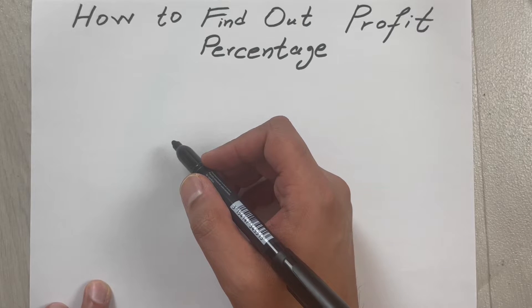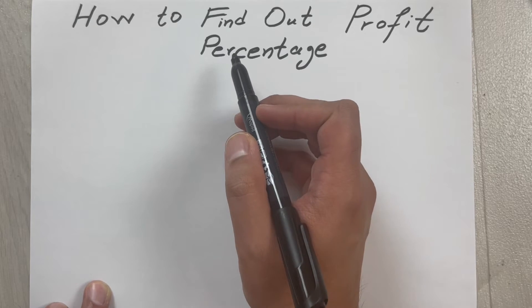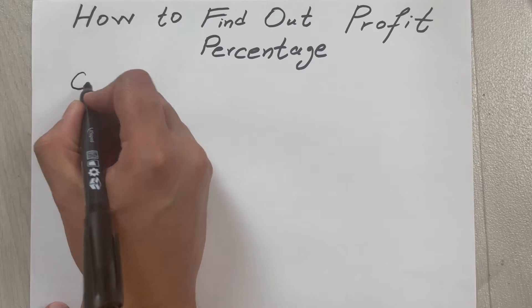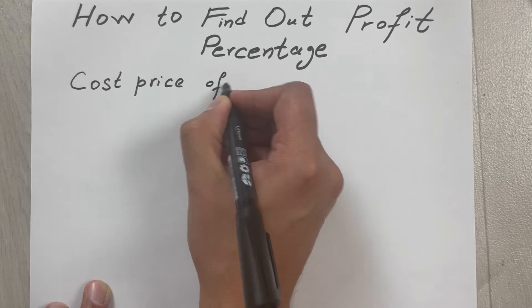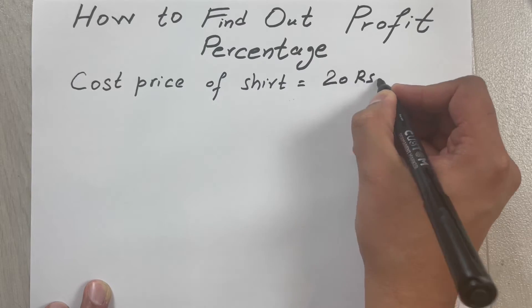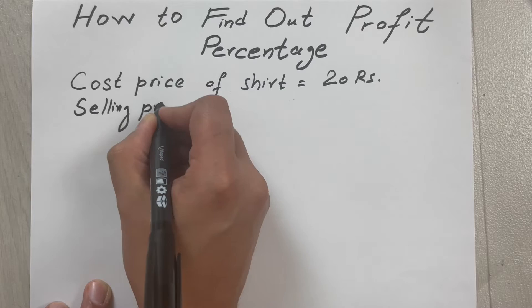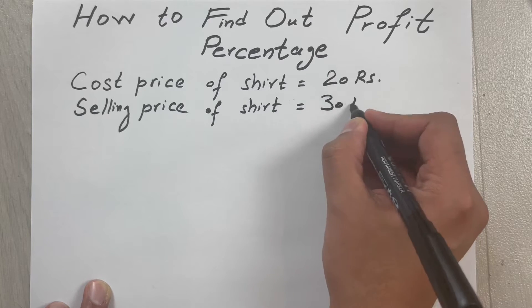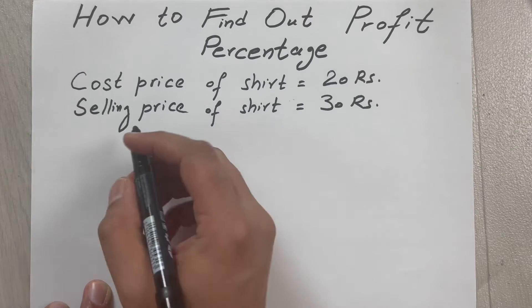Hello guys, I hope you are doing really well. In today's video I will show you how to find out profit percentage. So let's say we have a shirt and the cost price of the shirt is 20 rupees — cost price of shirt equals 20 rupees or 20 dollars, whatever you want. And the selling price of the shirt is 30 rupees.